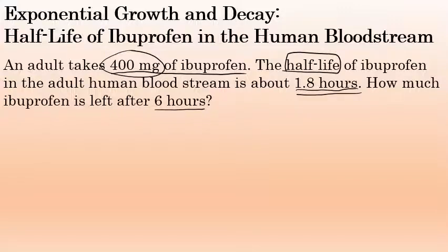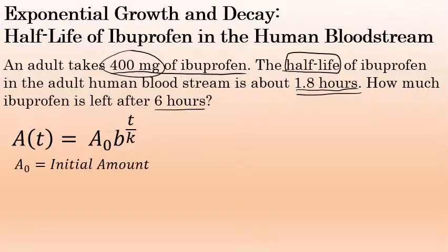The formula for half-life is a(t) = a₀ × b^(t/k). Let's talk about the parts of this formula. A sub zero is the initial amount — in this case we're starting with 400 milligrams of the drug in the bloodstream.